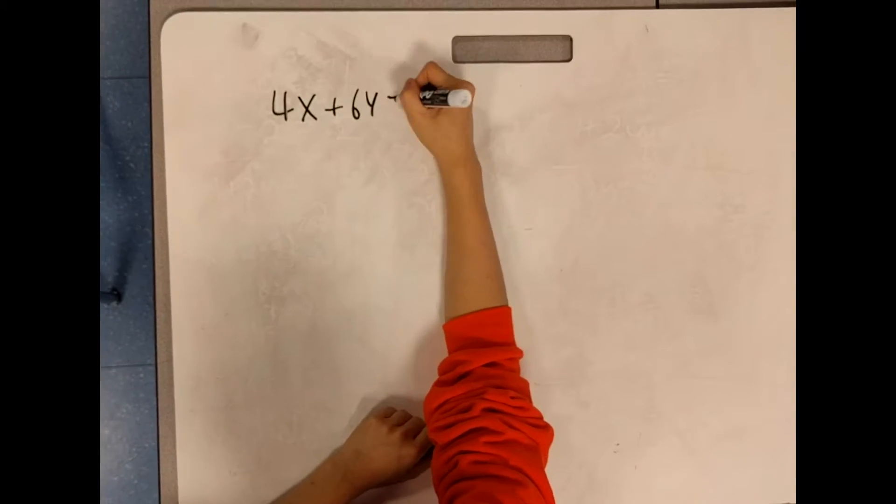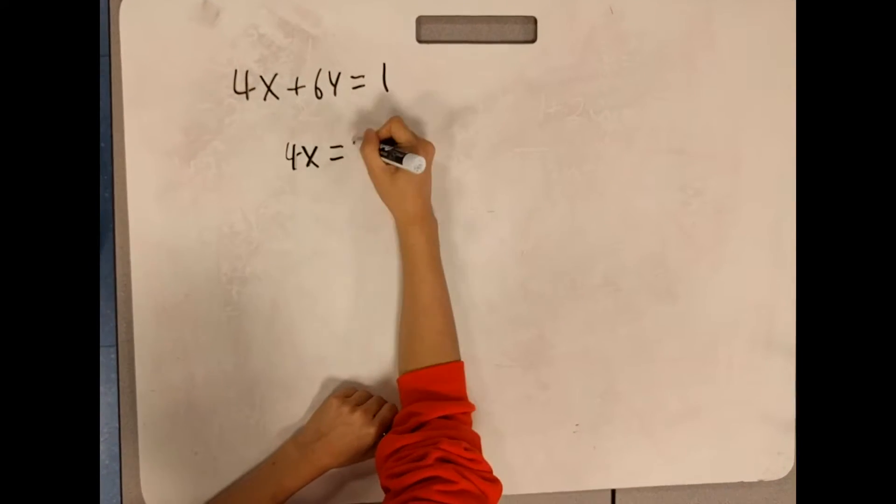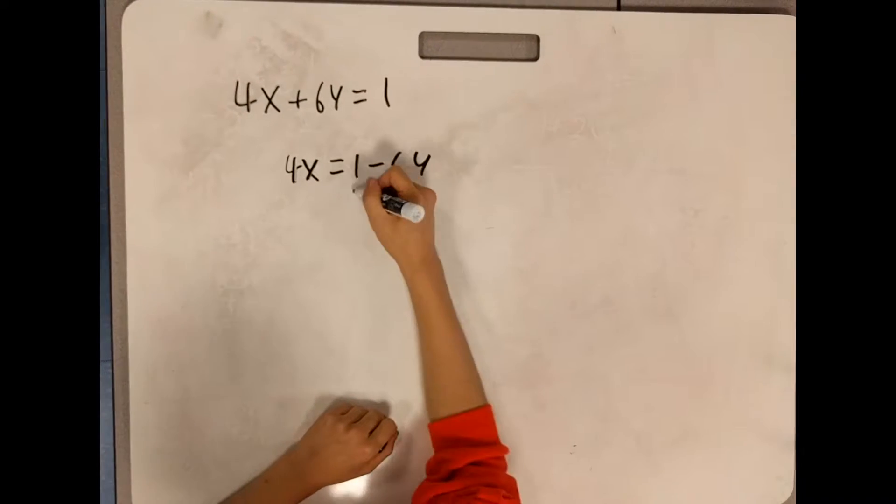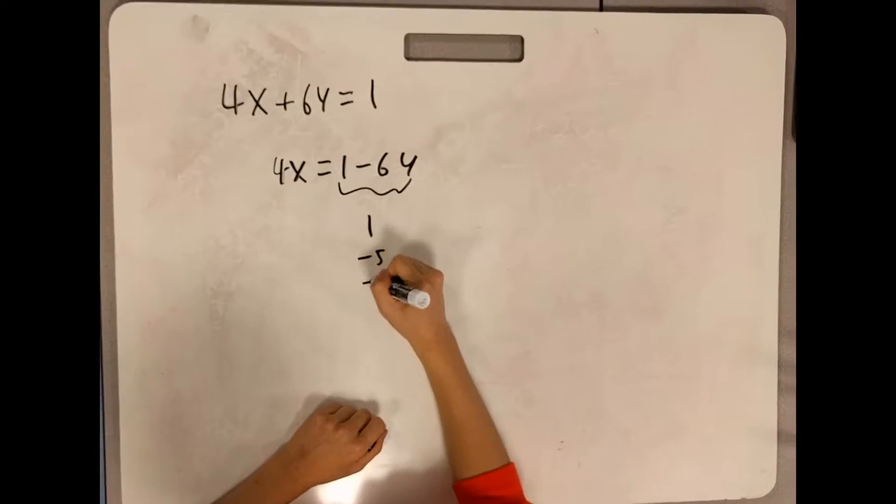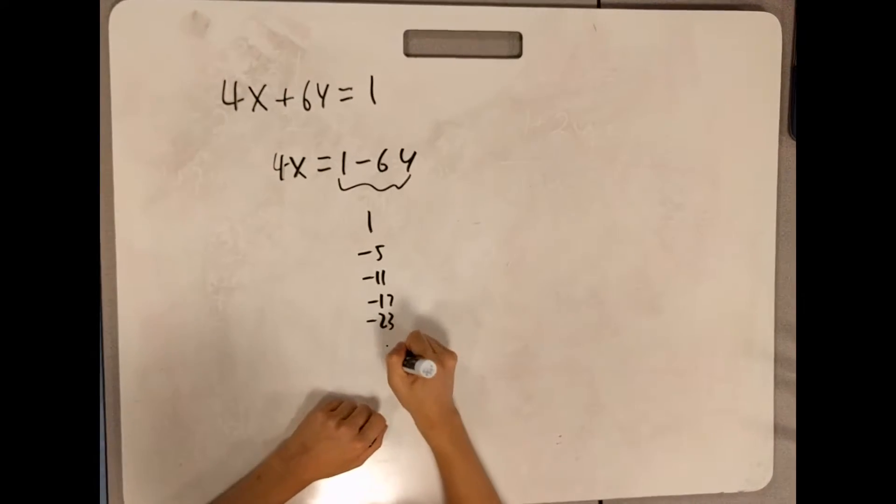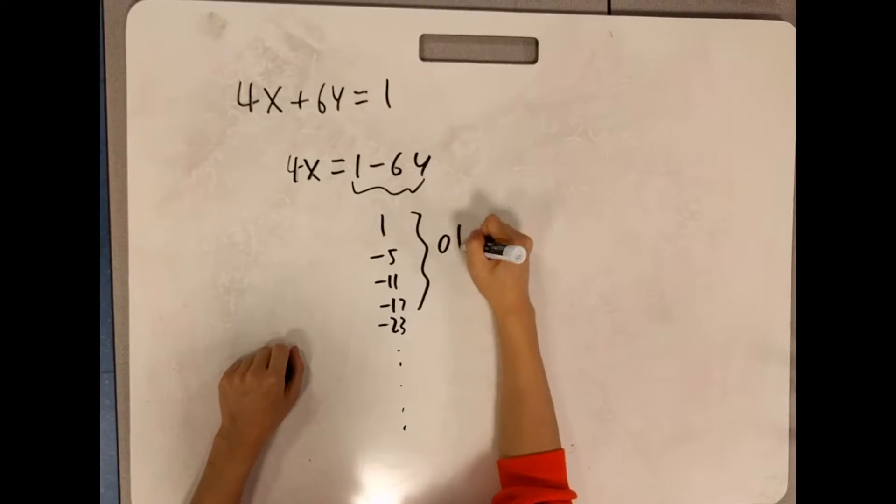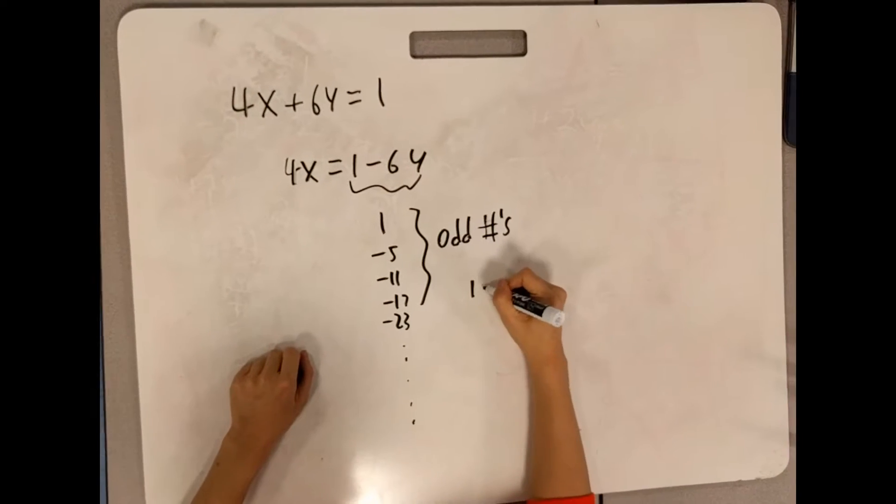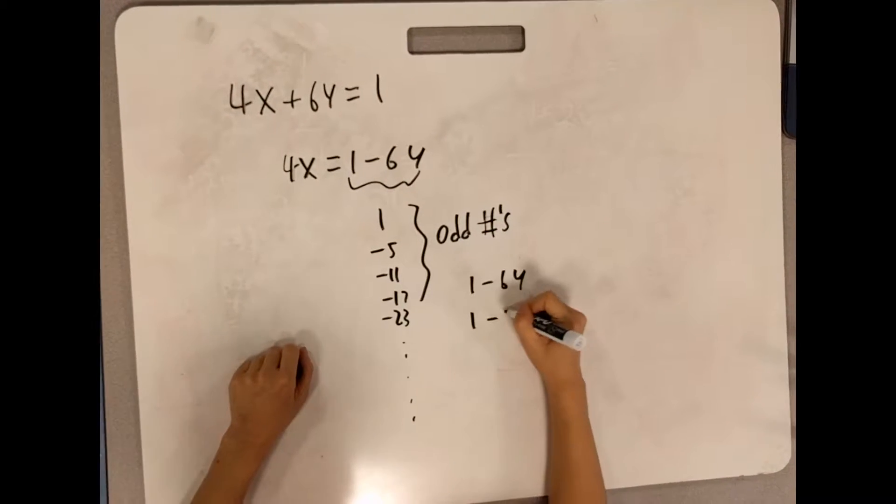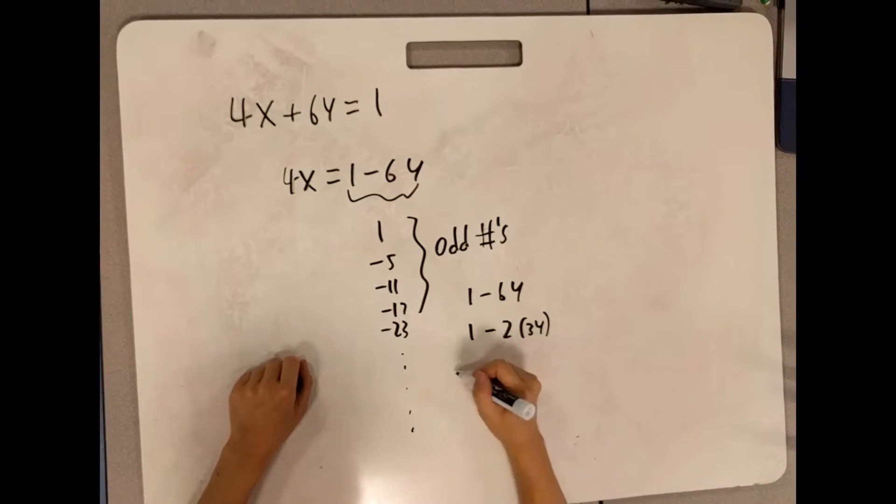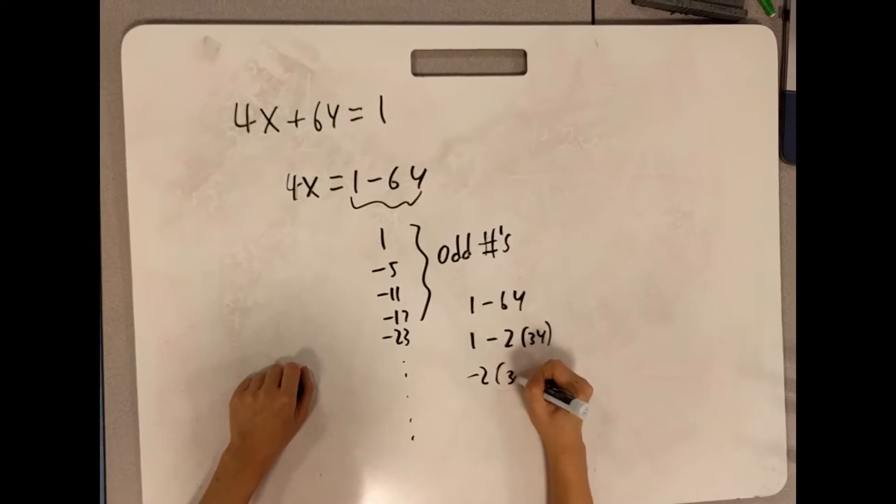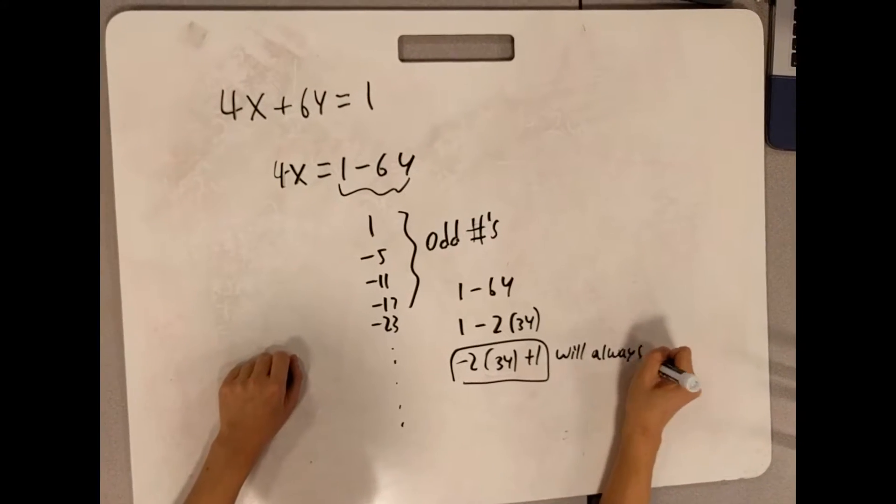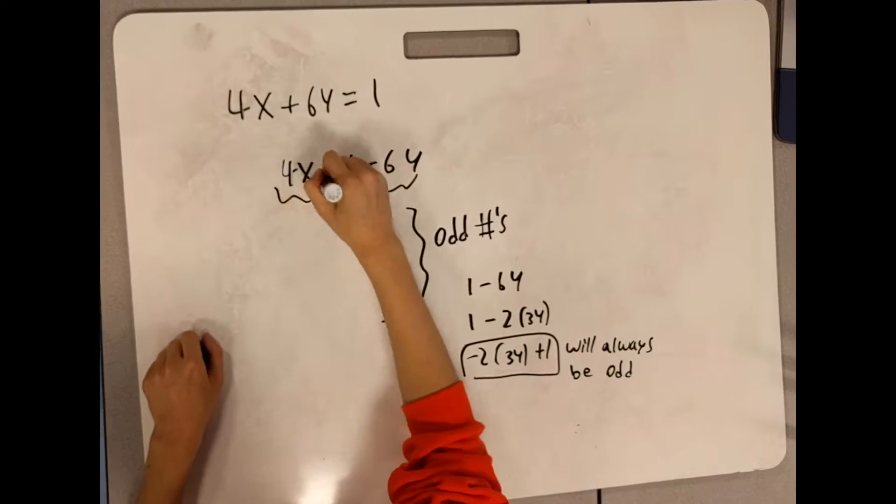We are given the equation 4x plus 6y equals 1. We can subtract both sides by 6y to obtain 4x equals 1 minus 6y. We can begin by trying several values for y, and quickly realize that all of these numbers are odd. This is because 6y is an even number, and when we subtract an even number from 1, it remains an odd number. However, on the left side of the equation, we will always have an even number. An even number can never equal an odd number. Therefore, the left and right side can never be equal if x and y are both integers.